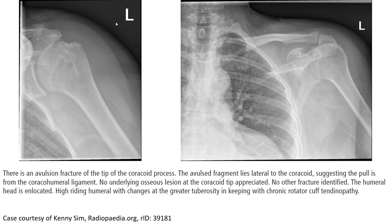Another example of a coracoid fracture. This is an avulsion fracture of the tip of the coracoid process. The avulsion fragment lies lateral to the coracoid, suggesting a pull from the coracohumeral ligament. No other fracture is identified. The humeral head is located. High-riding humerus and changes of the greater tuberosity are in keeping with chronic rotator cuff tendinopathy.